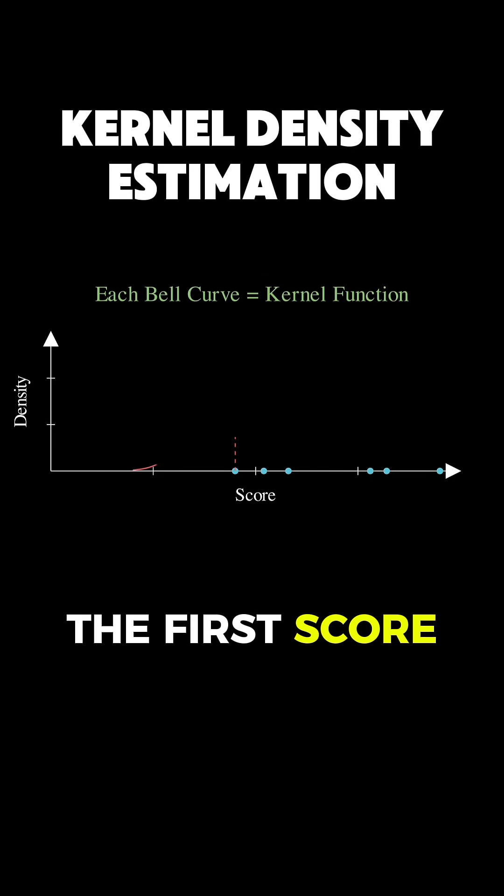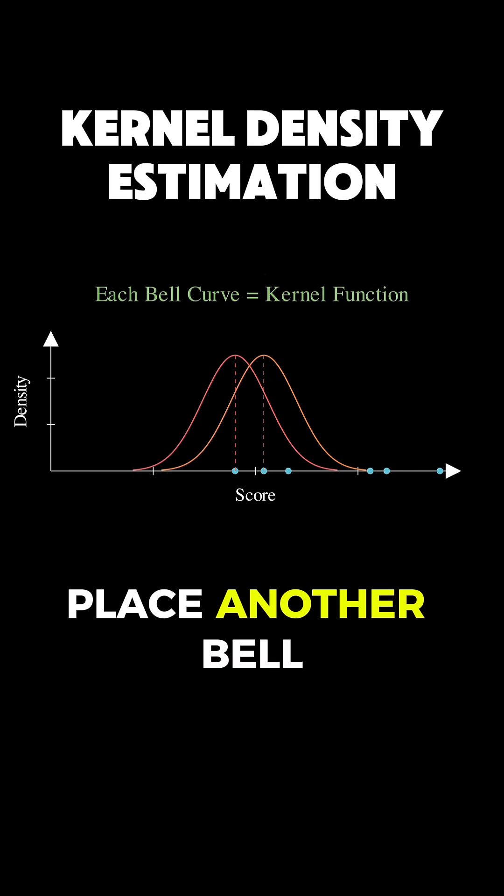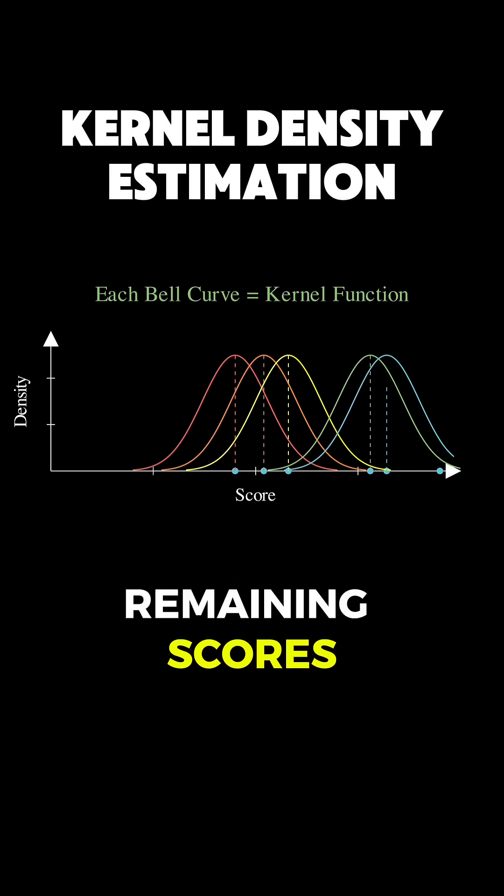So, at our first score, we center a bell curve there, then at the second score, we place another bell curve, and so on, for all the remaining scores.